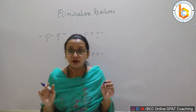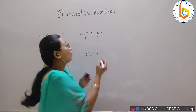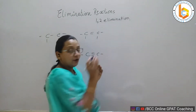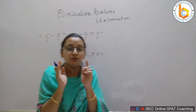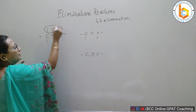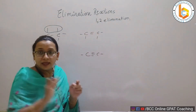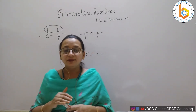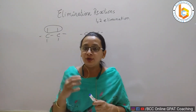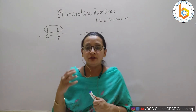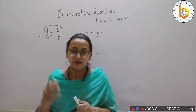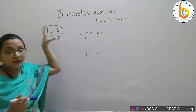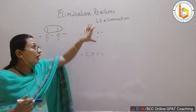Always remember, the type of elimination we are talking about in general is 1,2-elimination. If groups are not removed from adjacent carbons, you will not get a double bond — you will get some other reaction. When we call it elimination, it is 1,2-elimination. There is one more type called 1,4-elimination, which we will talk about in future videos. This 1,2-elimination is the method of preparation of alkenes.